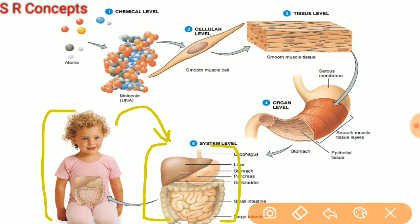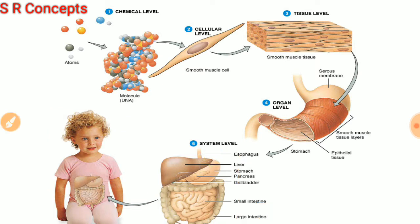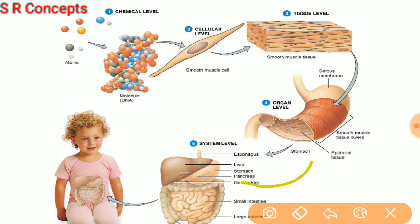The digestive system, for example, is a group of organs — liver, stomach, pancreas, intestine — that together perform the function of digestion. Other organ systems in the human body include the respiratory system, urinogenital system, and skeletal system. The body of any animal or human being is made up of more than one organ system.